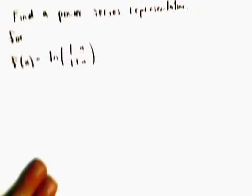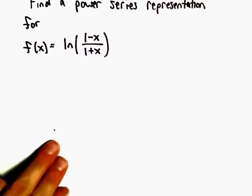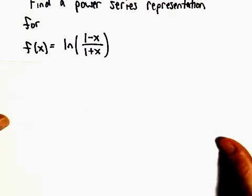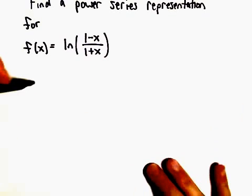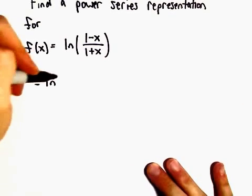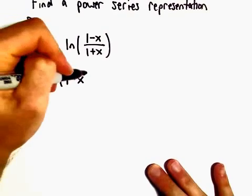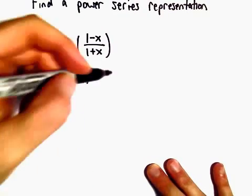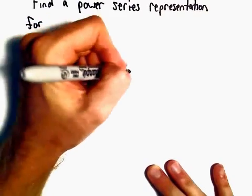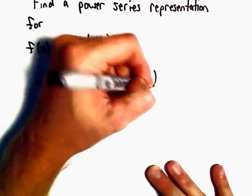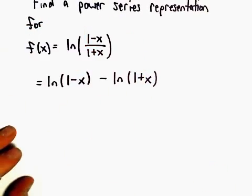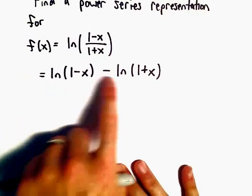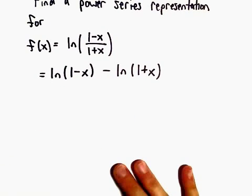Here we're going to find a power series representation for the function the natural logarithm of (1 minus x) over (1 plus x). The first thing I'm going to do is rewrite this as the natural logarithm of 1 minus x, minus the natural logarithm of 1 plus x — using properties of logarithms. Then I'm going to try to find a series representation for each one of these.